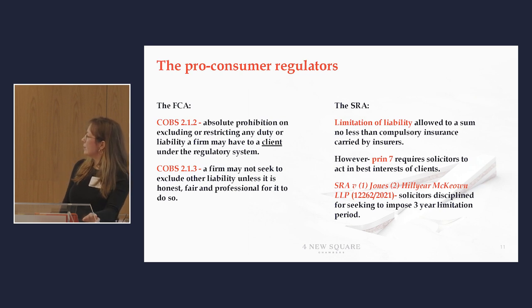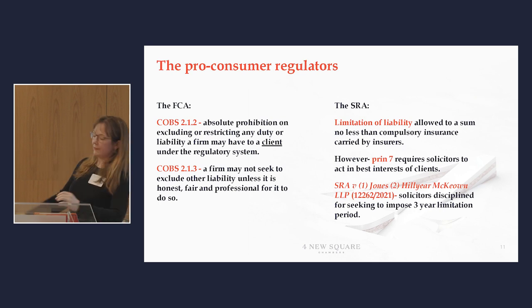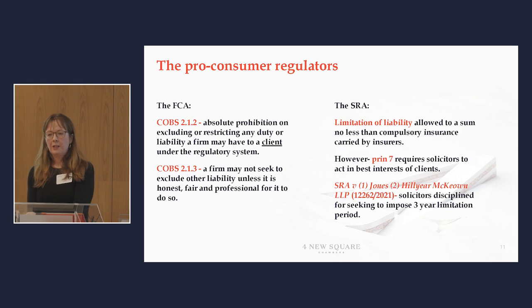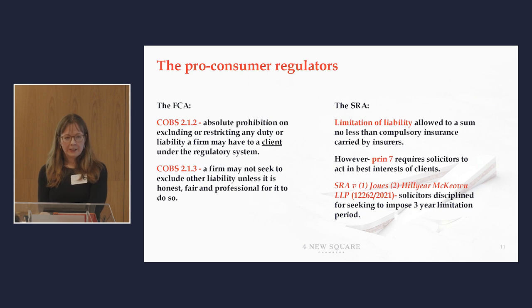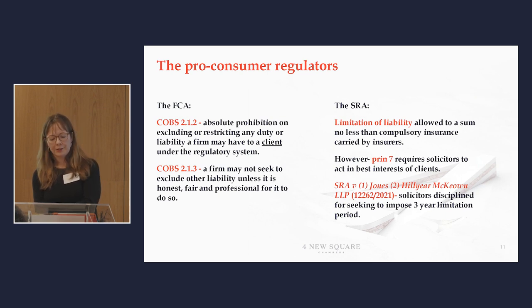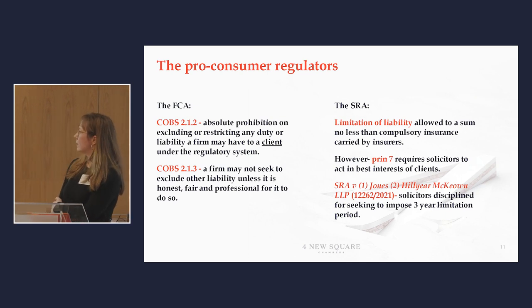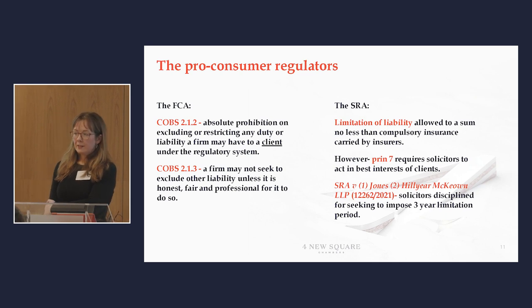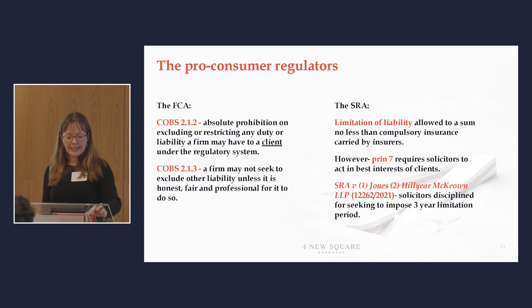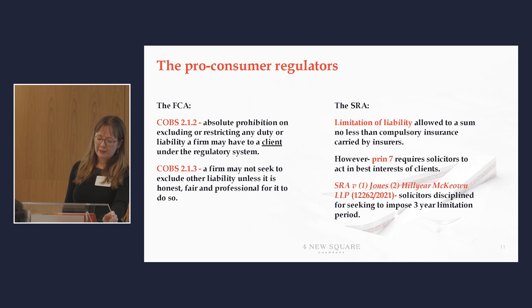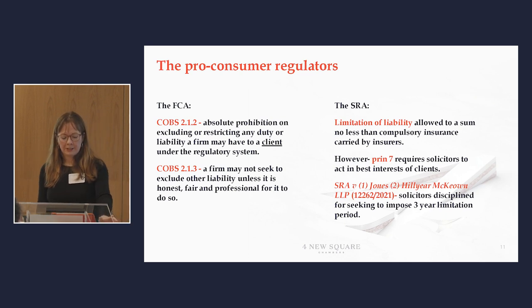The SRA also takes a consumer-friendly approach, although its rules are a bit more scattered and consequently a bit more difficult to find. The main ones to be aware of are Regulation 3.2 of the SRA Indemnity Insurance Rules, which stops total exclusions of liability on the part of solicitors but allows a limitation of liability to a sum no less than the compulsory insurance carried by insurers. You also have to think about Principle 7, which requires solicitors to act in the best interests of clients. That rule — or at least its predecessor in the 2011 Code of Conduct — did rear its head in the case of SRA v Jones and Hillier McCown, a good illustration of how regulators can take a clause about clients' best interests and apply it to the limitation of liability context.